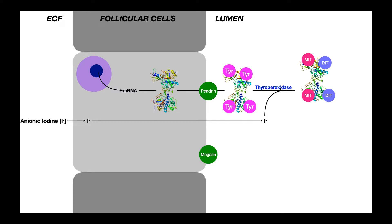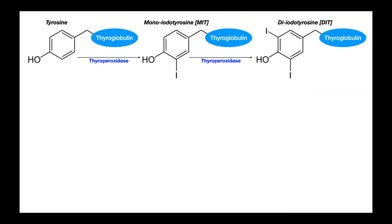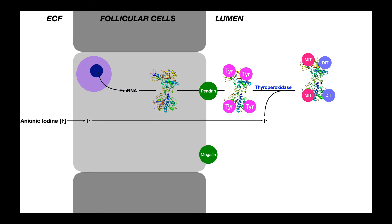The enzyme catalyzing both reactions is thyroperoxidase. Here's a tyrosine amino acid on thyroglobulin: with one reaction of thyroperoxidase, one iodine atom is attached, giving us MIT — monoiodotyrosine. This MIT can undergo another thyroperoxidase reaction where a second iodine is added, flanking the hydroxyl group, giving us DIT — diiodotyrosine. At this stage, our chemically modified thyroglobulin has some MITs and some DITs, and it will undergo more reactions with thyroid peroxidase.